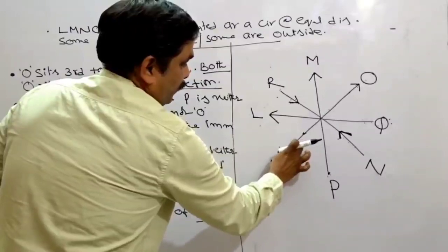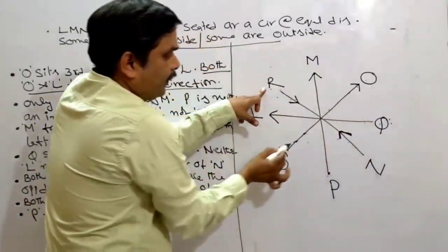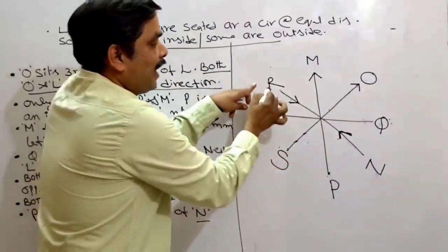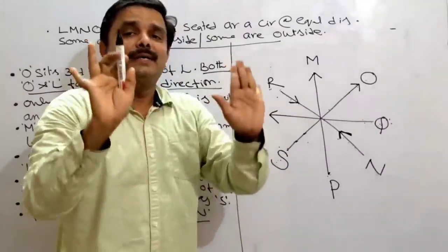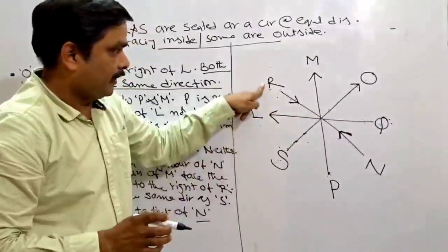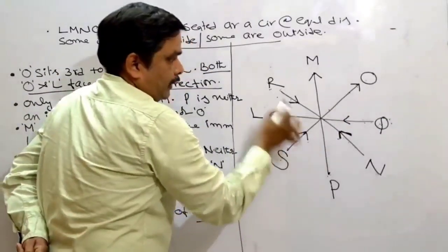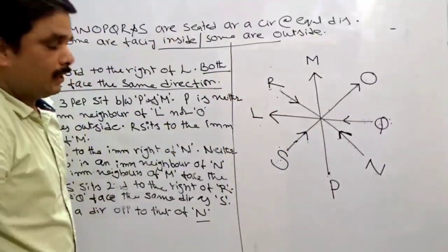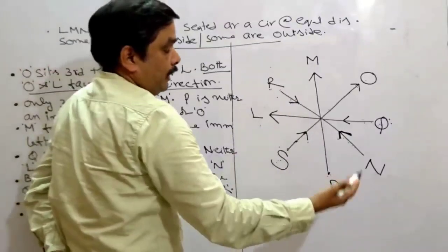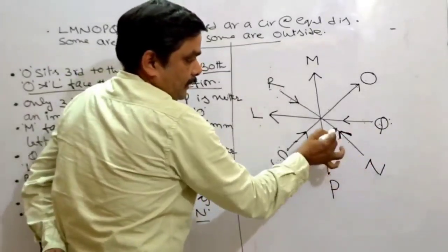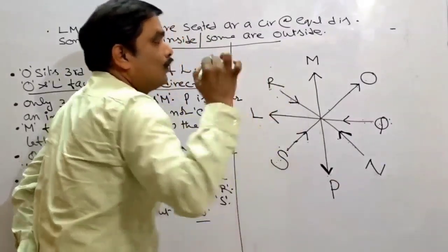The final information: P faces the direction opposite to that of N. N is facing inside, so P must be facing outside. This is how we need to go for the question — step by step unraveling the puzzle.